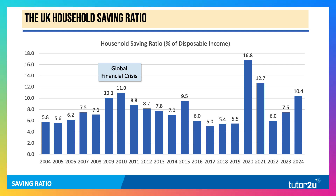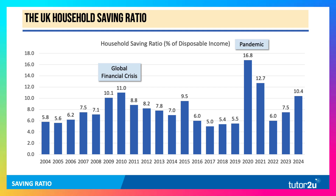The ratio then came down again during the period from 2011 onwards, although it jumped in 2015. But then look at the big rise in 2020 during the pandemic.